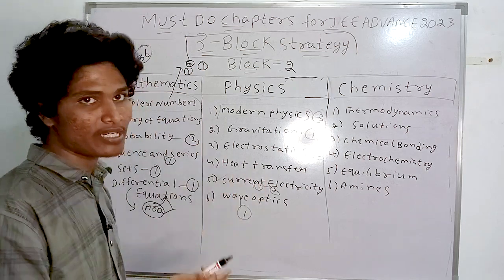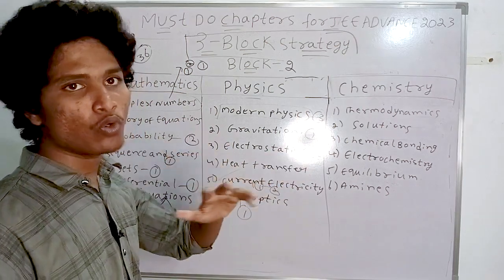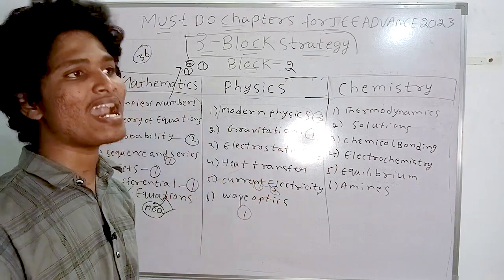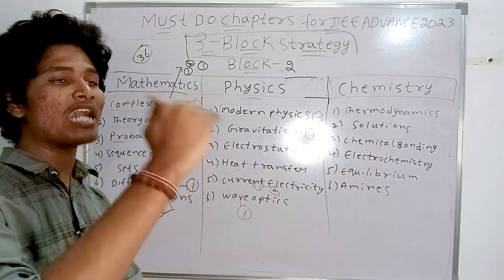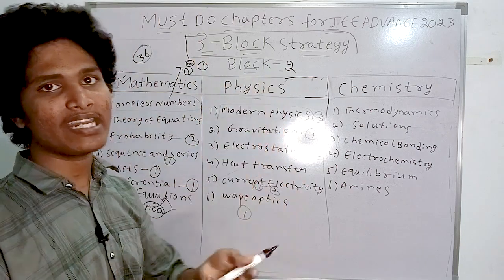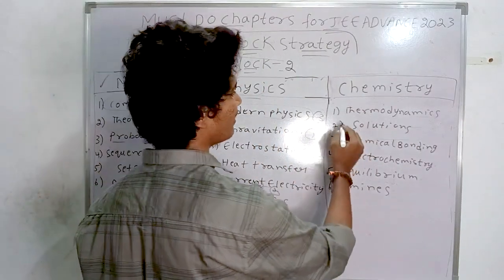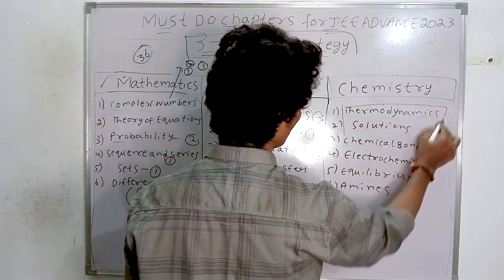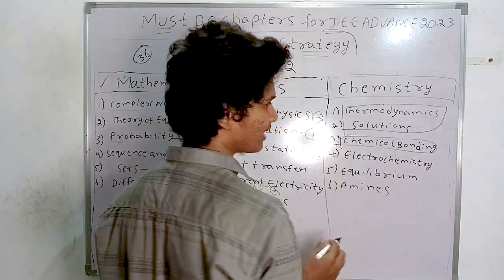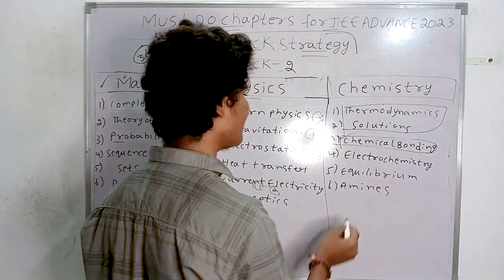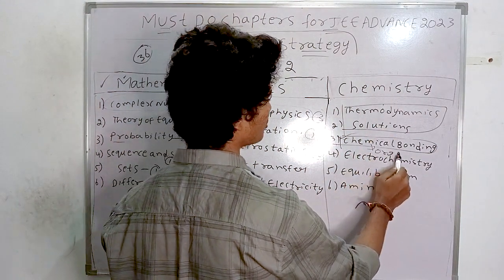Every concept and every chapter is important for JEE Advanced. You have to make a plan to at least get into an IIT at the starting level, and then reach the advanced level to get your desired branch.